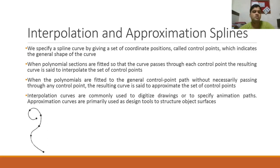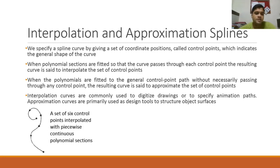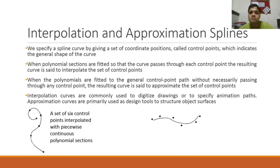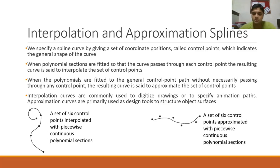This is an interpolation curve — a set of six control points interpolated with piecewise continuous polynomial sections. As you can see, each point is called a control point and the arc is passing through each one. An example is a spline drawn on a 3D modeling tool. The next is the approximation spline — here the curve is not actually passing through any point, but is just approximated towards each point, as if each control point is trying to pull the curve towards itself.